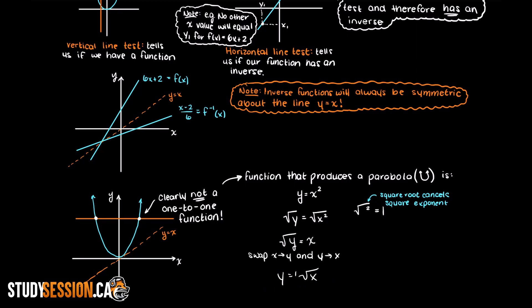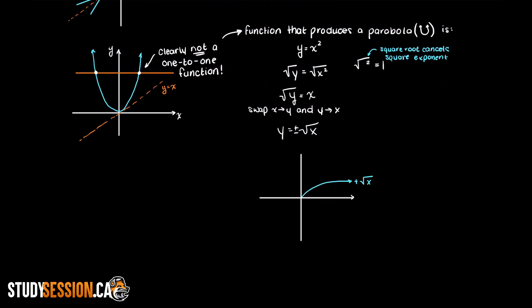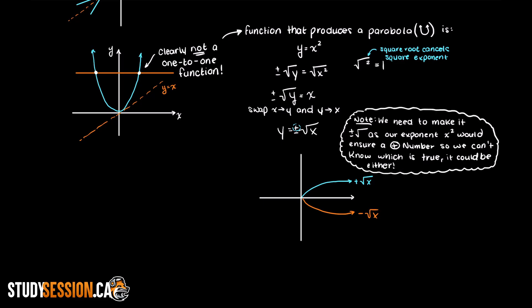Well, this gives us the square root of x, which looks like the following graphically. But observing this, it is clearly not a function, as it fails the vertical line test. Therefore, the function x squared does not have an inverse, as it fails the horizontal line test.